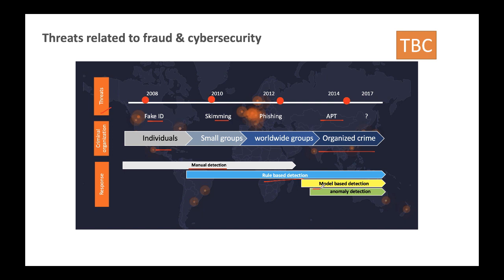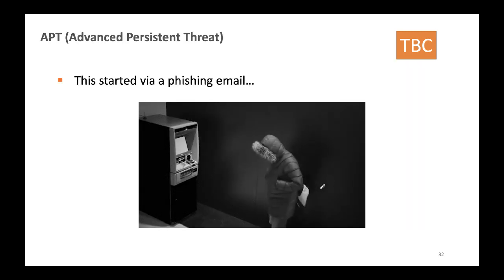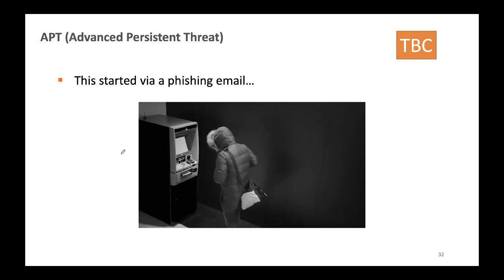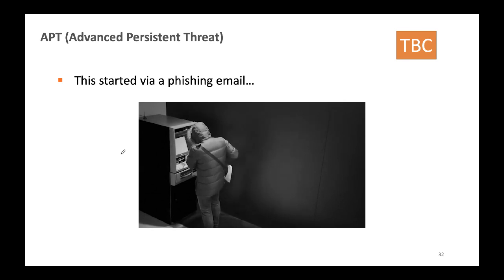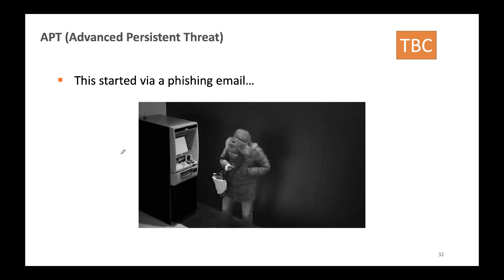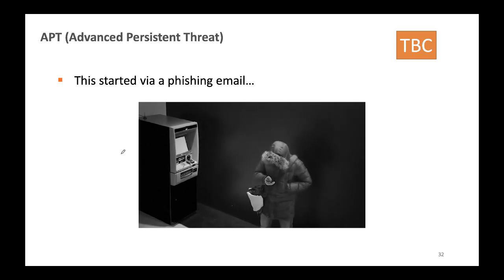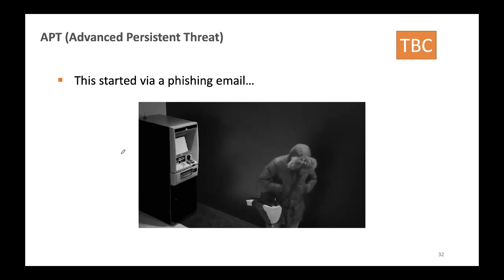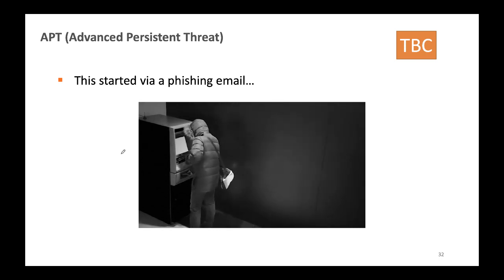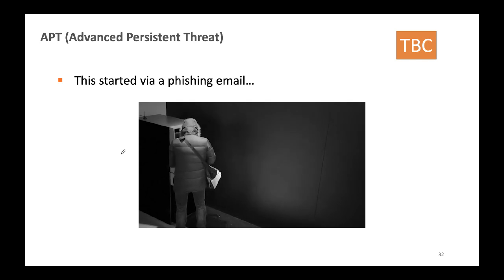We evolved from manual expert systems and rule-based detection to machine learning and AI for automatic threat detection. APT is not something from a movie — it actually happened in a European bank a few years ago, where criminals hacked employees' PCs, gained high-level permissions, manipulated databases to mimic personnel behavior, and even controlled ATM machines to dispense cash at predetermined times.